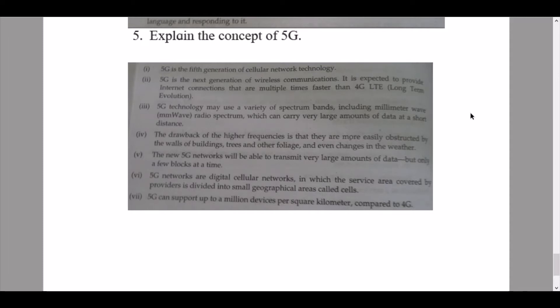5G networks are digital cellular networks in which the service area covered by providers is divided into small geographic areas called cells. 5G can support up to a million devices per square kilometer compared to 4G.